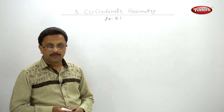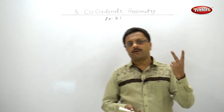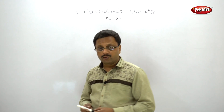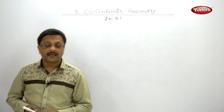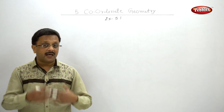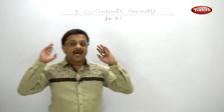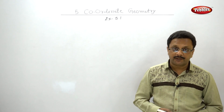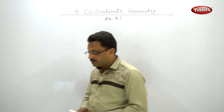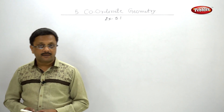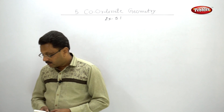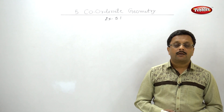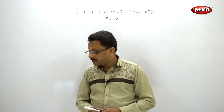For slope, we use only two formulas: m = tan θ, and m = (y2 - y1) / (x2 - x1). Applying the first formula: tan 45° = 1, tan 30° = 1/√3, and tan 90° is not defined.